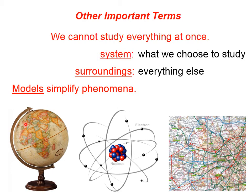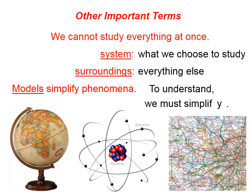We also need models to simplify phenomena. Pictured here, we have not the Earth, but a model of the Earth. Here we have not an atom, but a model of an atom. Here we have not a city or a state, but a model. We need models in order to grasp phenomena — to understand, we must simplify.